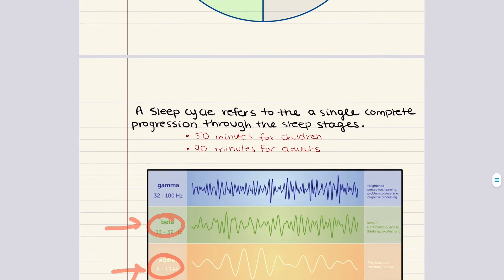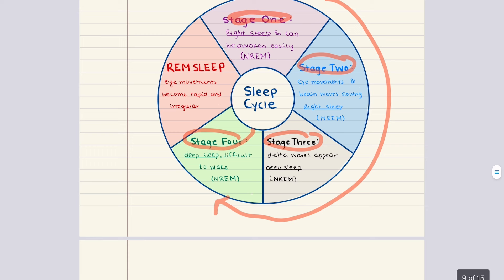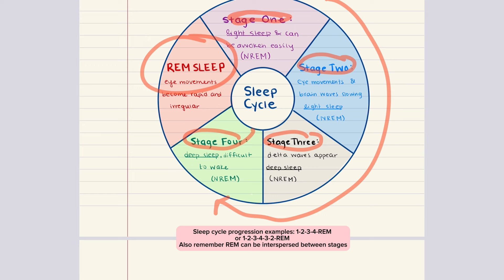Stages one through four are all part of non-rapid eye movement (non-REM) sleep. Rapid eye movement (REM) sleep is interspersed between cycles of the non-REM sleep stages. In REM sleep, arousal levels reach that of wakefulness, but the muscles are paralyzed. It's called paradoxical sleep because heart rate, breathing patterns, and EEG mimic wakefulness, but the individual is still asleep. This is the stage in which dreaming is most likely to occur and is also associated with memory consolidation — specifically procedural memory, while slow-wave sleep is more associated with declarative memory consolidation.